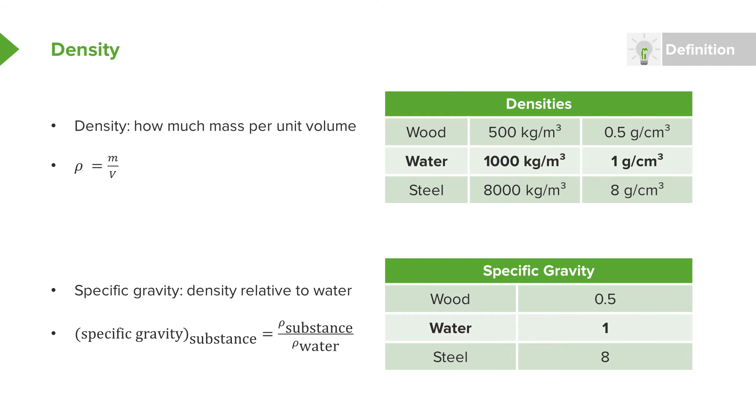So using these same three quantities, wood has a density of half of water's density. So it has a specific gravity of 0.5. Water, by definition, has a specific gravity of 1, since it has its own density. And then steel has a specific gravity of 8, being 8 times more dense than water.